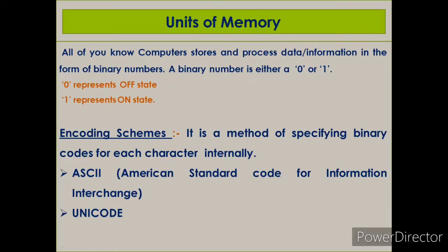Encoding scheme: it is a method of specifying binary codes for each character. Since the computer understands only binary language, whatever data we provide is stored in the form of 0 and 1. Two common encoding schemes are ASCII (American Standard Code for Information Interchange) and Unicode. Nowadays, ASCII is widely used everywhere.